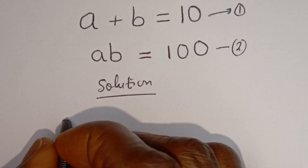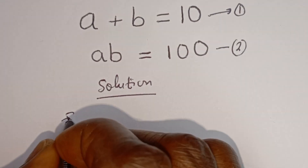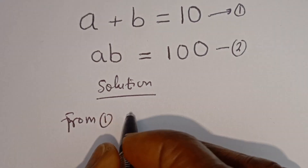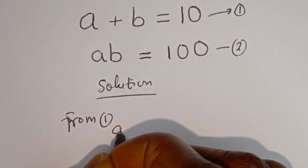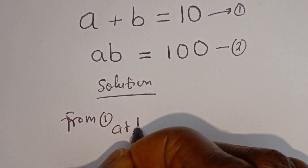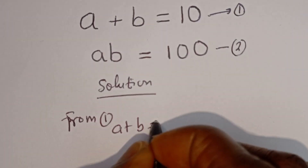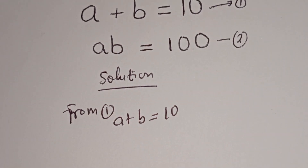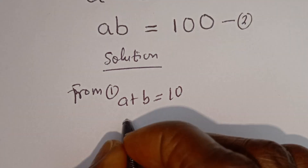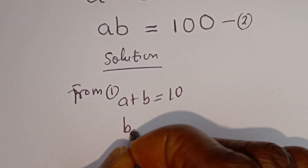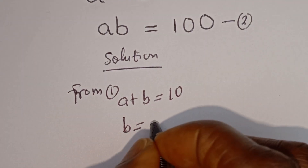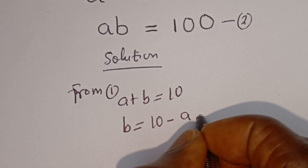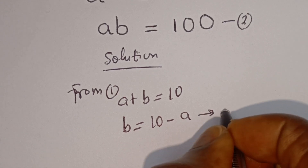From equation 1, a plus b is equal to 10. Let's make b the subject of the formula: b is equal to 10 minus a. Let's call this equation 3.